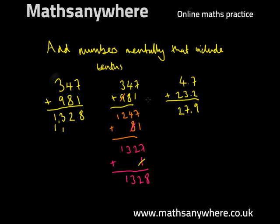We could use our other technique, so 4.7 plus 23.2. Well, 4.7 plus 20, try and use the same colors, 4.7 plus 20 is 24.7. So we've dealt with the 20, then we need to add on the 3.2.